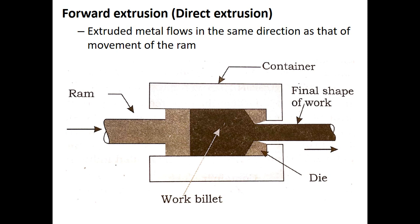In forward extrusion, a heated billet — heated above the recrystallization temperature — is placed inside the container portion of the equipment. The ram is moved to apply pressure on the billet, and metal is extruded through the die until a small amount remains. The extruded metal flows in the same direction as the movement of the ram, and hence the name forward extrusion. This is also called direct extrusion.